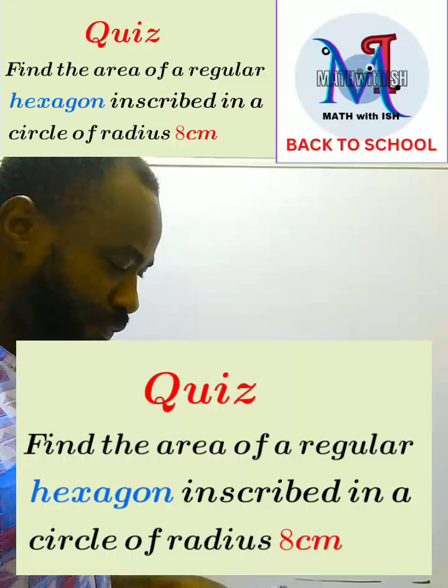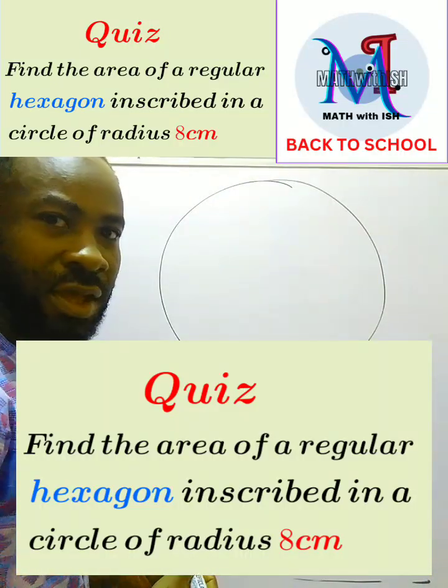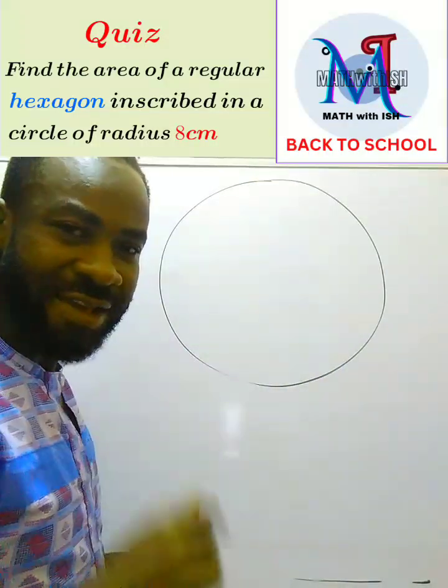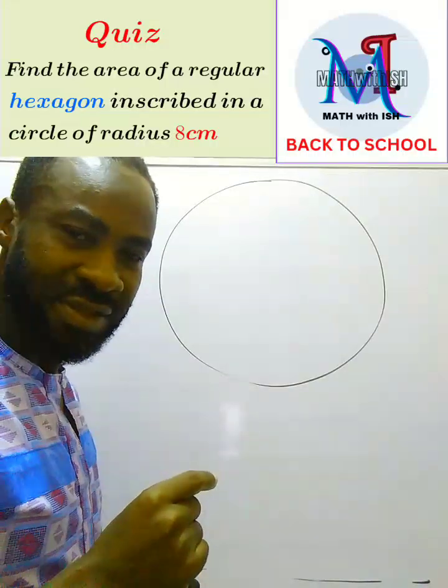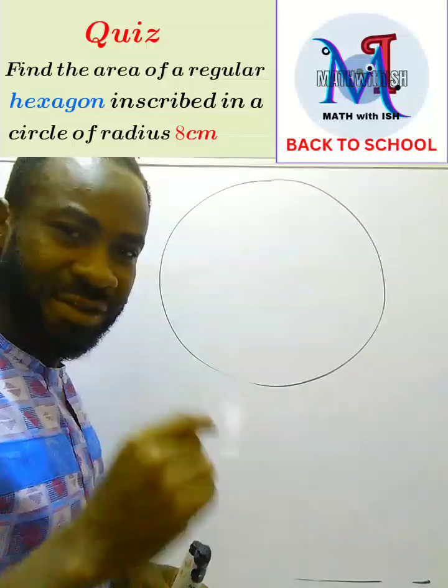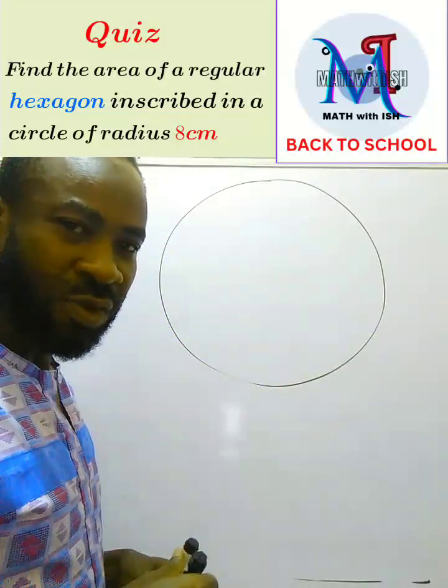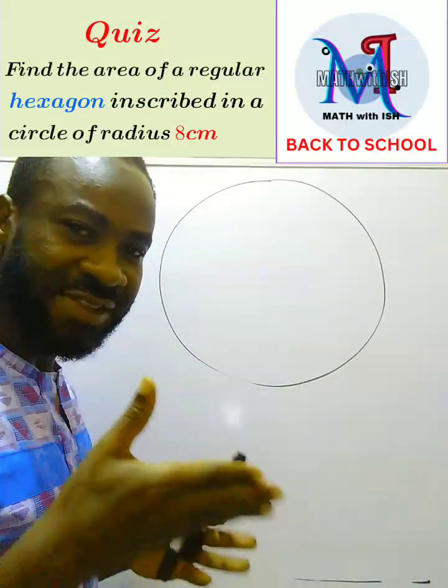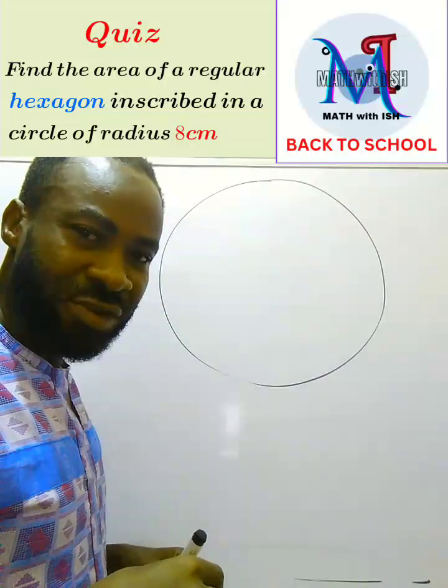Now when you have a circle and they say that a regular hexagon is inscribed in that circle, what does that mean? It simply means that a hexagon where all the sides are equal. When they use the word regular, regular means that all the sides of that hexagon are equal.